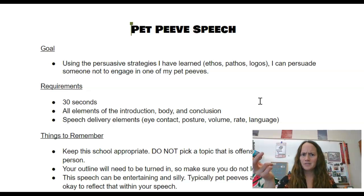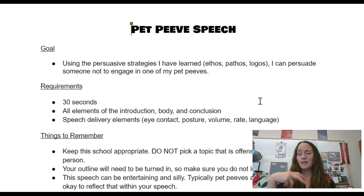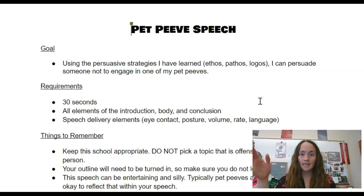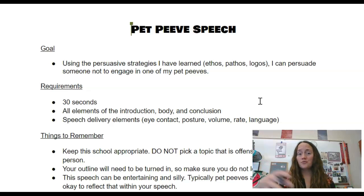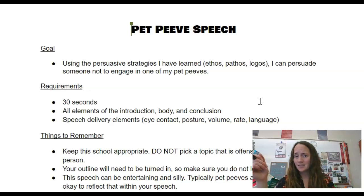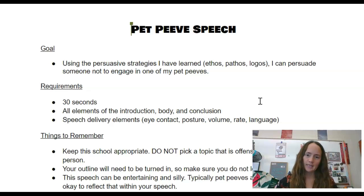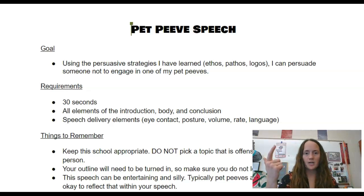For pathos, you're evoking emotion. And then for ethos — credibility. When we're looking at ethos, what we're doing is establishing why we are a credible person to talk about this. Now, you're talking about a pet peeve, not a medical injury, so you don't need a doctor. For example, if you're talking about something that happens at the high school — like people walking in the hallways — maybe you establish that you've been going to school for eight years and have witnessed clustered hallway walking since your days as a first grader. That establishes your credibility. So to summarize: ethos establishes credibility, logos gives logical reasons why someone shouldn't engage in your pet peeve, and pathos evokes emotion.